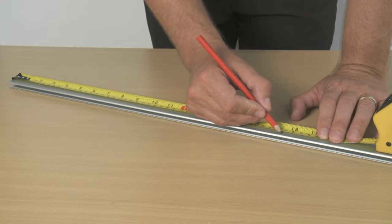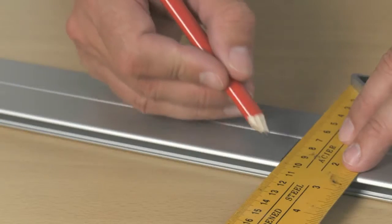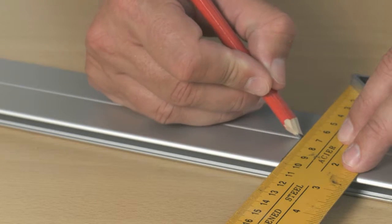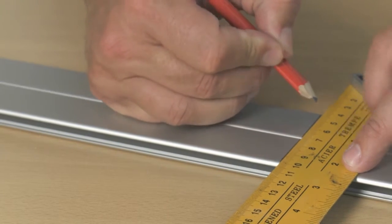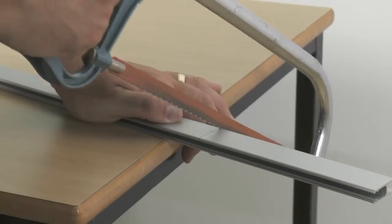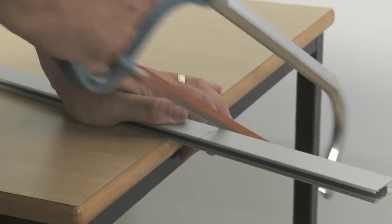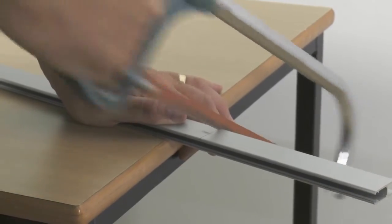First you need to measure and mark out the glass rail ready for cutting. This should match the length of your glass panels. Then using the saw, cut the glass rail to the desired length.